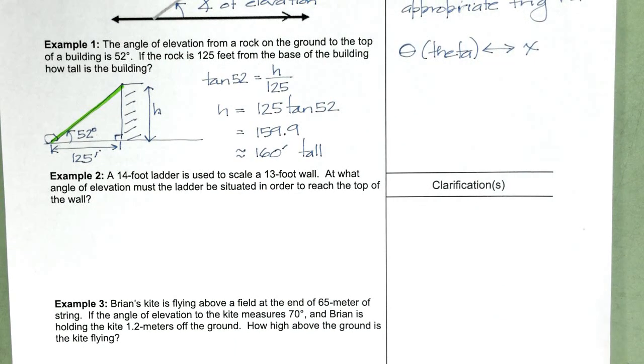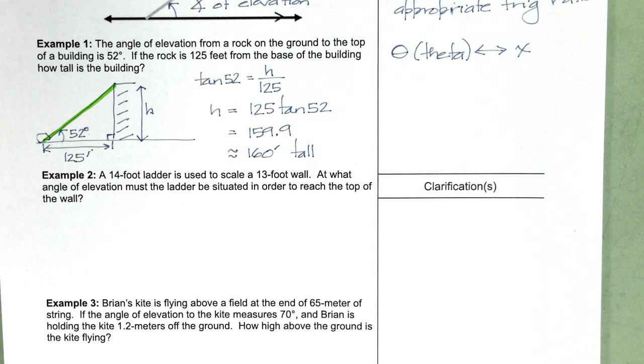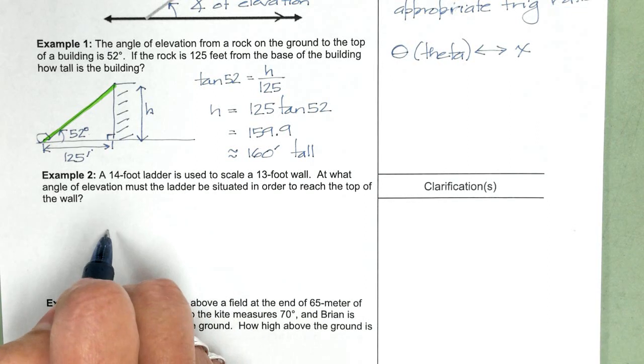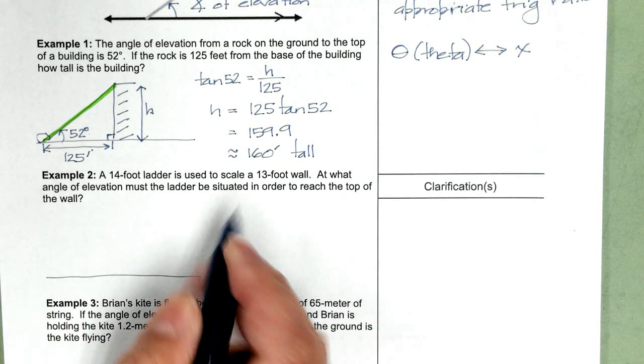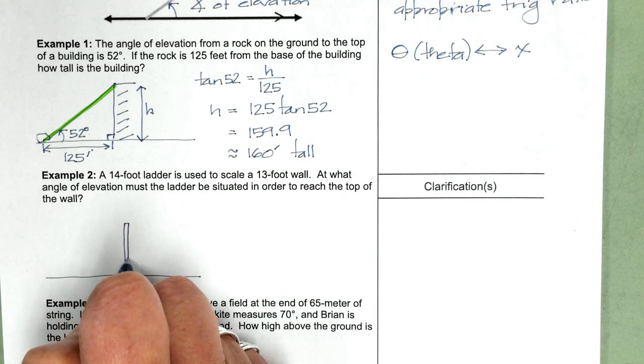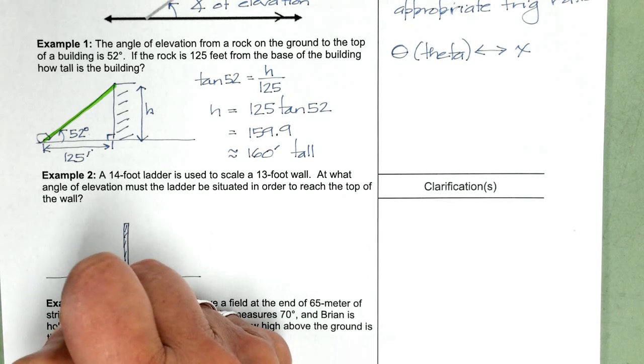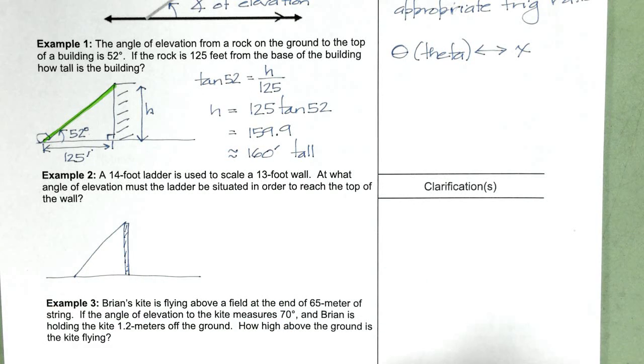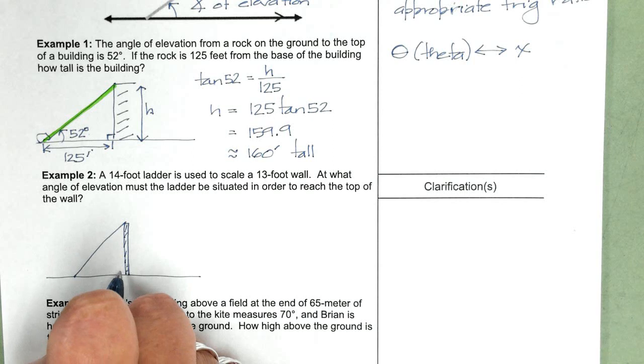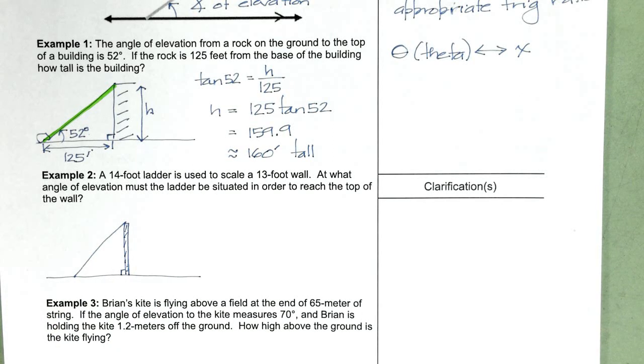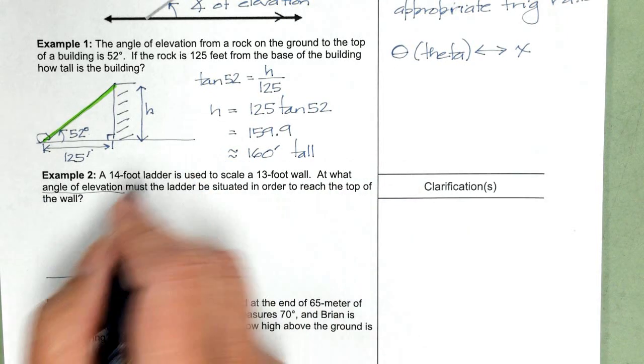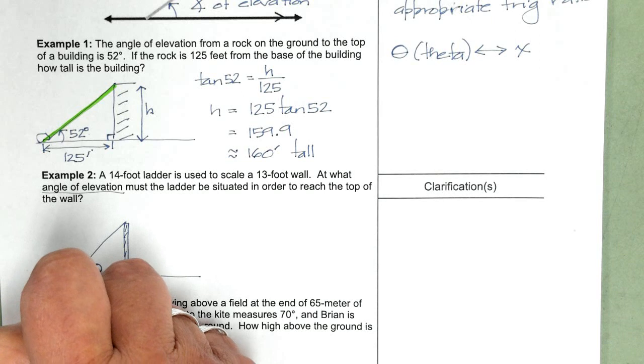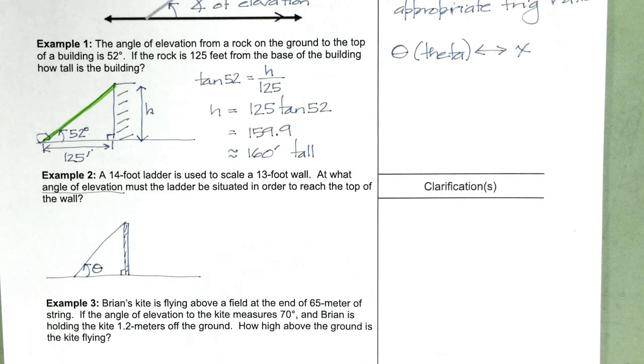Example 2, we have a 14-foot ladder used to scale a 13-foot wall. At what angle of elevation must the ladder be situated in order to reach the top of the wall? So again, we're going to start with a sketch. Here's the ground. Here's the wall. And we're going to prop a ladder so it reaches the top of the wall. Again, we're going to assume this wall is perpendicular to the ground. We are looking for the angle of elevation. This is the angle of elevation. We don't know what it is, so I'm labeling it theta.